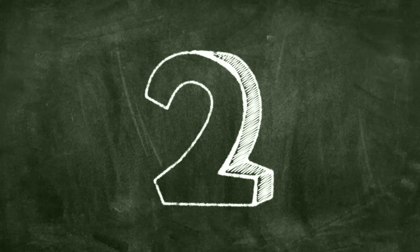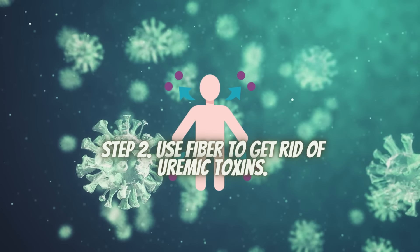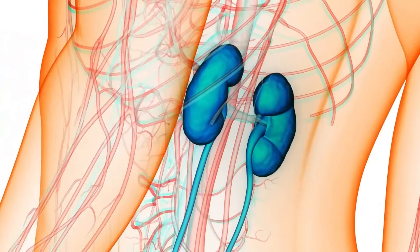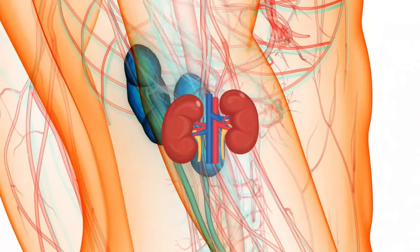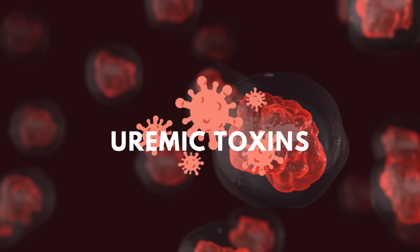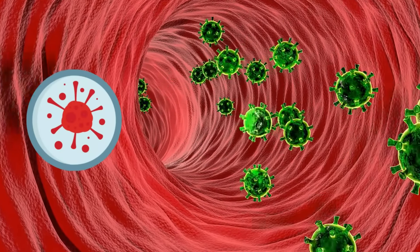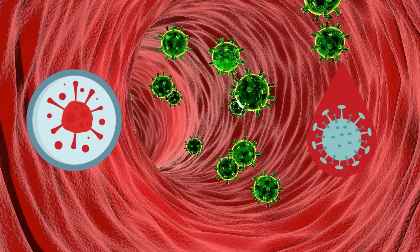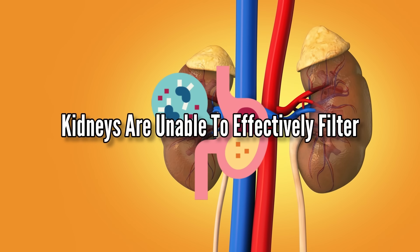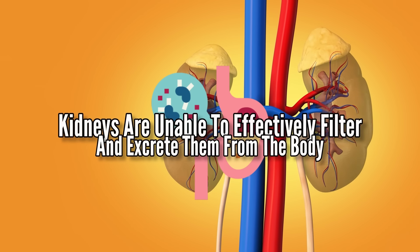Step 2: Use Fiber to Get Rid of Uremic Toxins. Okay, listen up. Here's another trick to help your kidneys out. Have you ever heard of uremic toxins? Uremic toxins are certain waste products and harmful compounds that can build up in the blood, especially when the kidneys are unable to effectively filter and excrete them from the body.